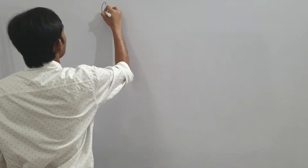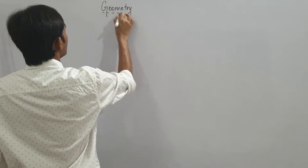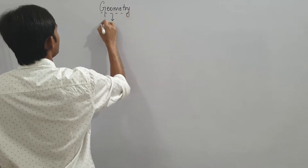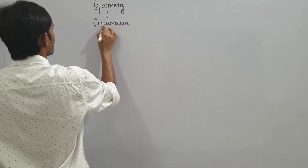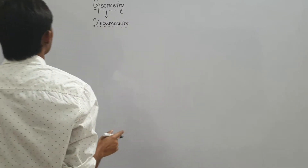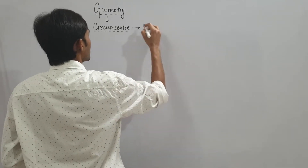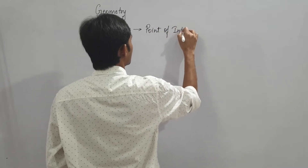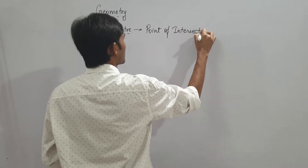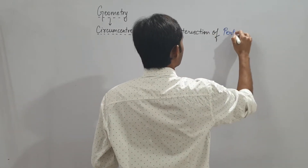Good morning. Moving further on geometry, we will take circumcenter. I would suggest you all to first go through all previous lectures of geometry. In the previous lecture, we saw the definition of circumcenter — it was the point of intersection of perpendicular bisectors.